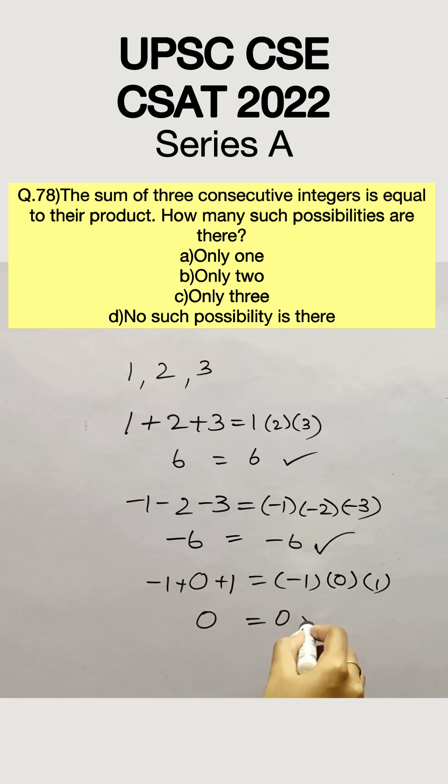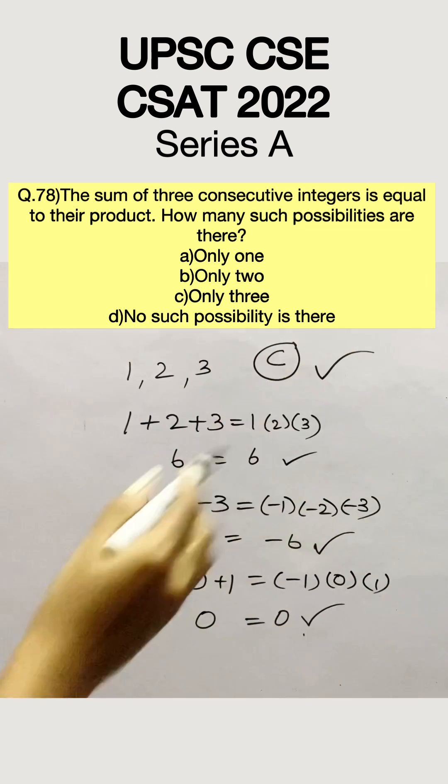Hence, we can conclude that there are three possibilities. So option C is the right answer.